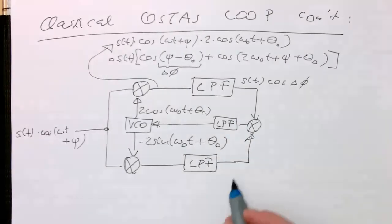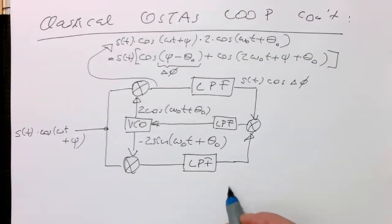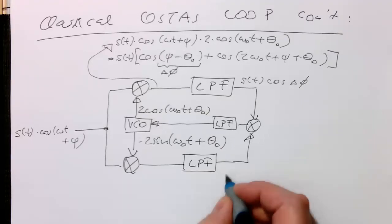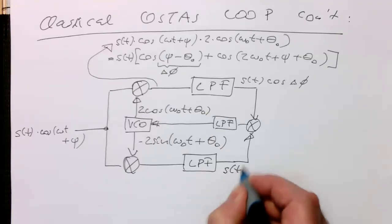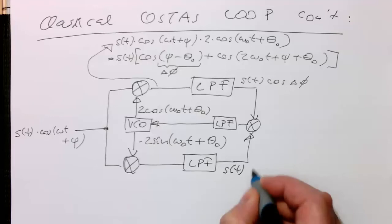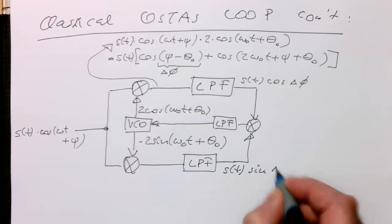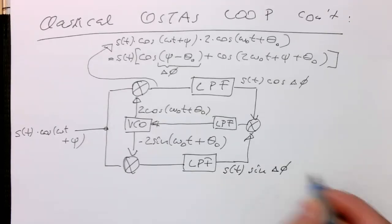So we can do exactly the same on the other side here, which is obviously exactly the same idea that we multiply this cosine with the sine here, with the same recipe. And then on this side here, we're getting out S of t, and then sine delta phi here, at this point.